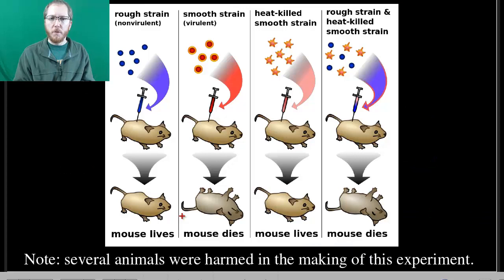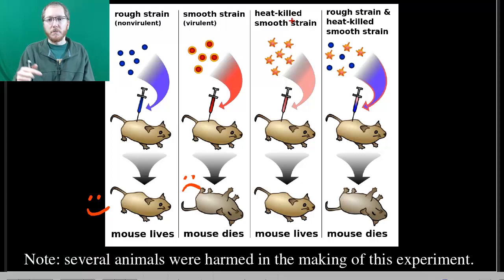The experiment: they gave the mouse this rough strain without a capsule, and we have a mouse live. Then they gave it the smooth strain which has a capsule that protects it, and you get a dead mouse. When you take and kill the lethal strain, heat it up and destroy it, then give that to the mice, the mouse lives because you've killed the bacteria.